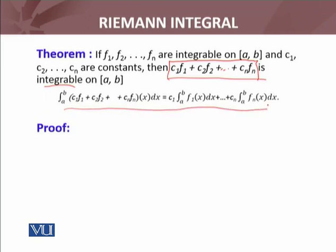आप इसको proof जो है, Riemann sum लेके भी कर सकते हैं। Take the arbitrary Riemann sum of c1f1 plus c2f2 plus and so on, cnfn. उसको देखें कि Riemann sum क्या बनता है। This is one way.